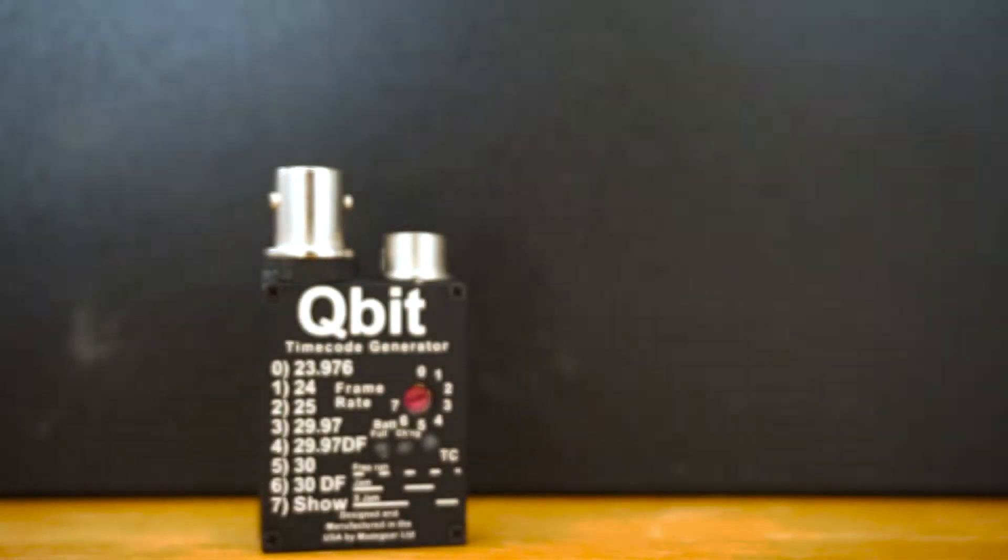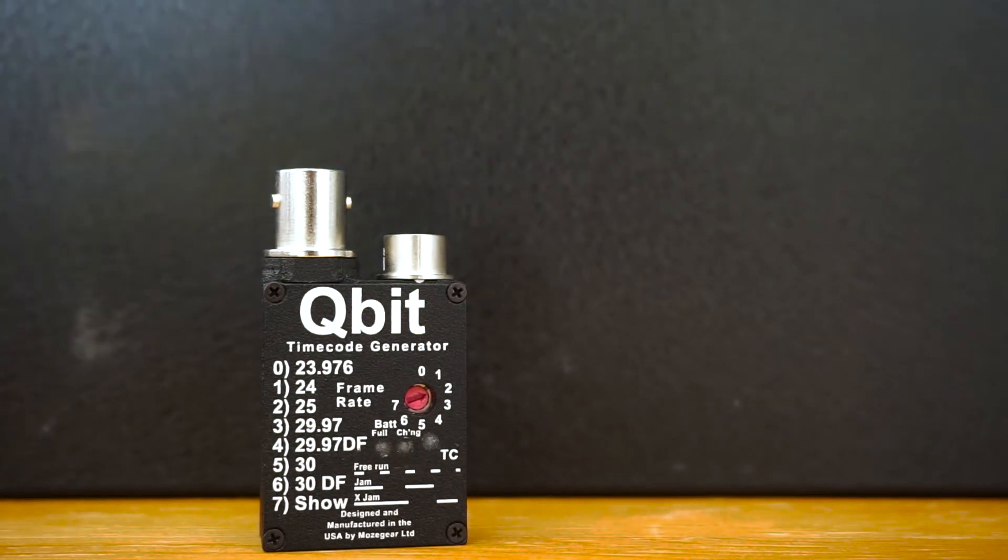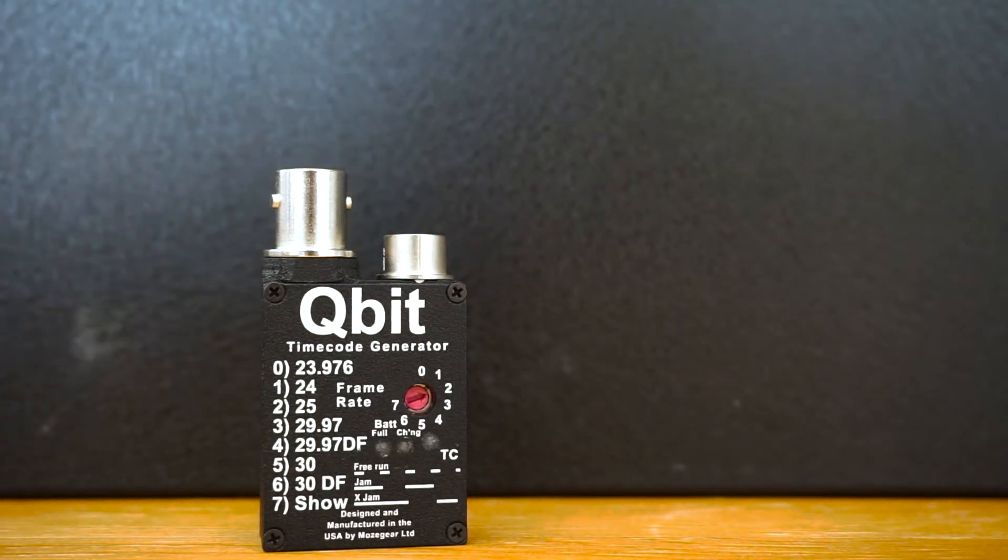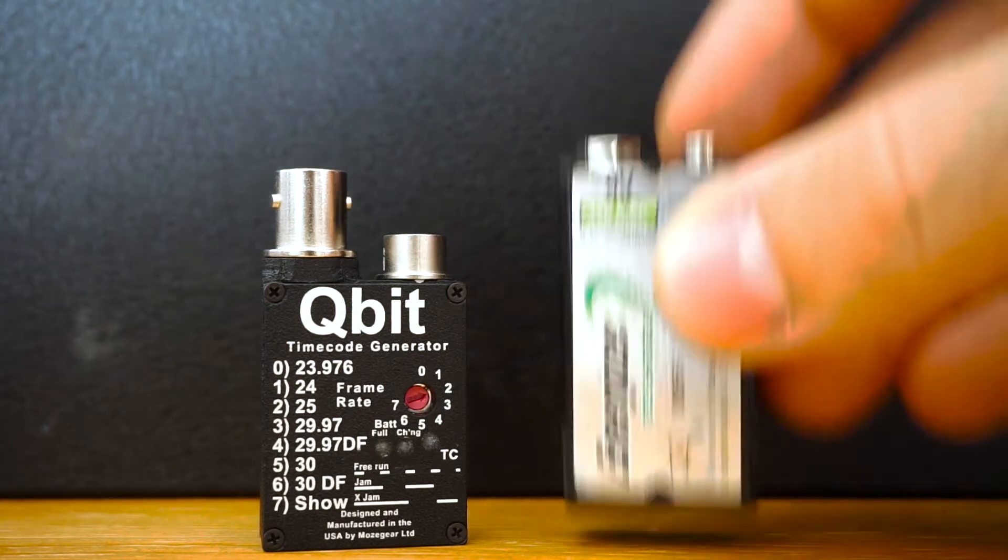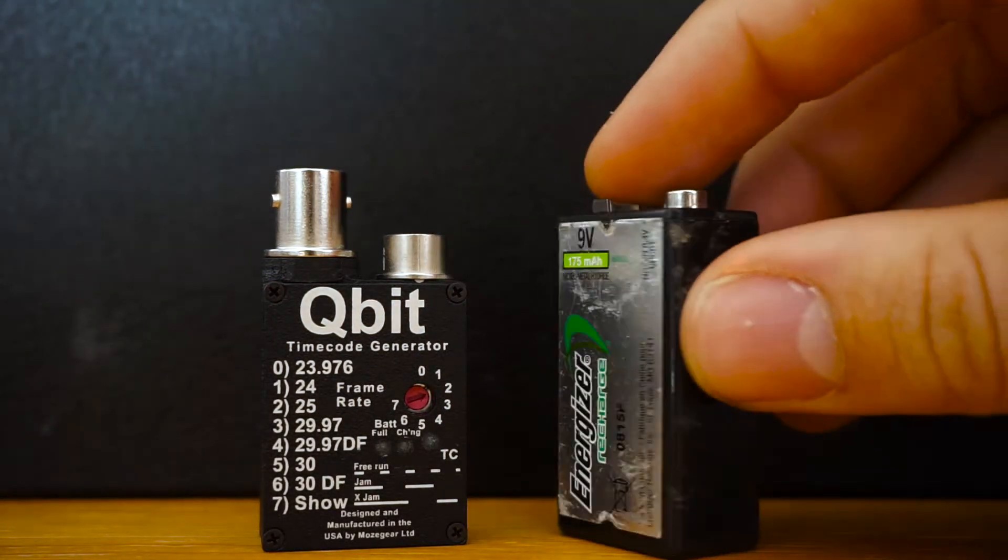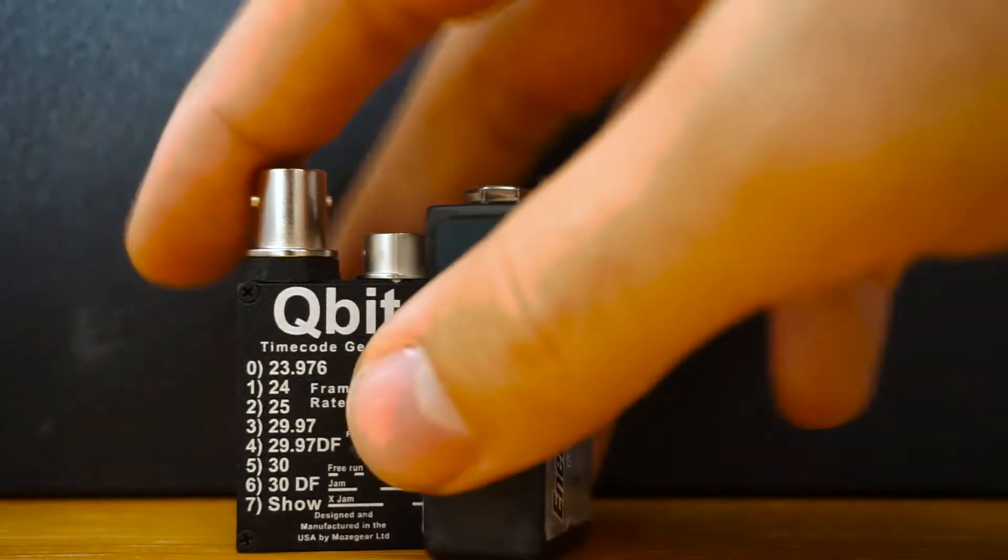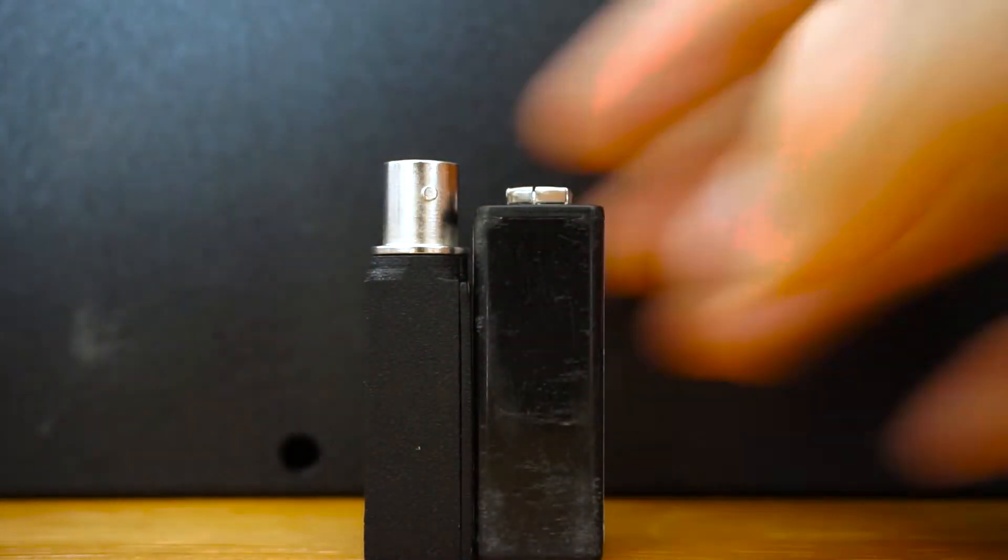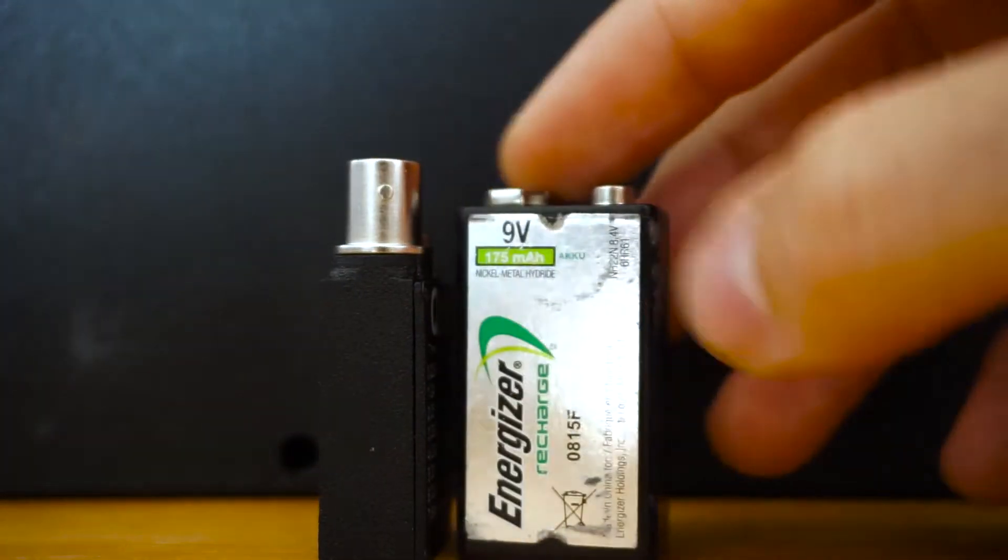Hey everyone, Man from soundrolling.com here. I wanted to show you the Qubit, a very small timecode generator from Mozgear. This is literally very tiny - it's got to be the smallest in the world. It definitely compares to this 9-volt battery. It's even thinner and just a tiny bit taller.